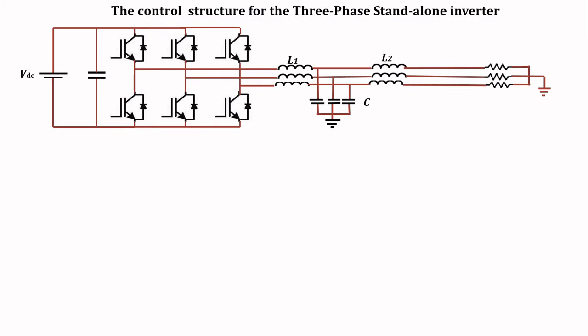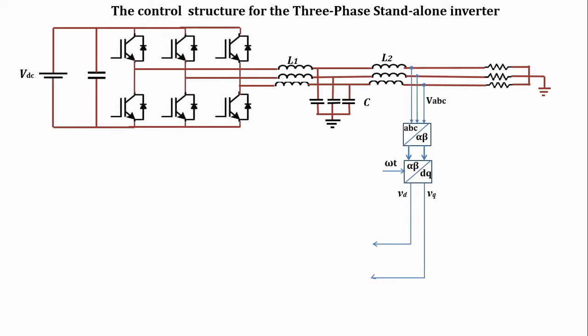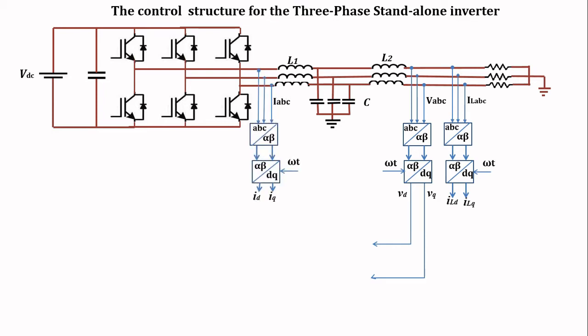For implementation of the controller, we need to sense the 3-phase load voltage, sense the 3-phase load current, and convert those values to D and Q. Also on the inverter side, we need to sense the inverter current and convert this 3-phase value to D and Q. The control loop for this inverter consists of the voltage outer loop control and the inner current loop control.